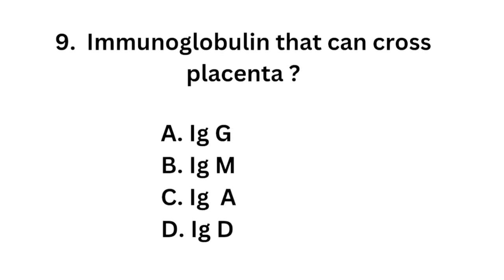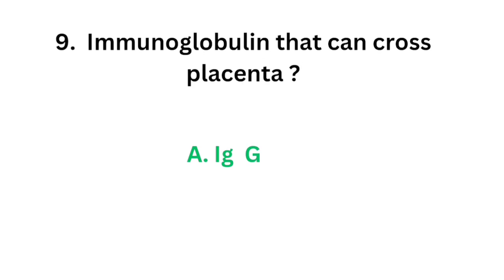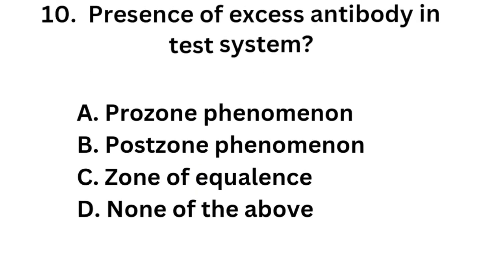Question 9. Immunoglobulin that can cross the placenta: Option A, IgG; Option B, IgM; Option C, IgA; Option D, IgD. The correct answer is Option A, IgG. The immunoglobulin that can cross the placenta is IgG.